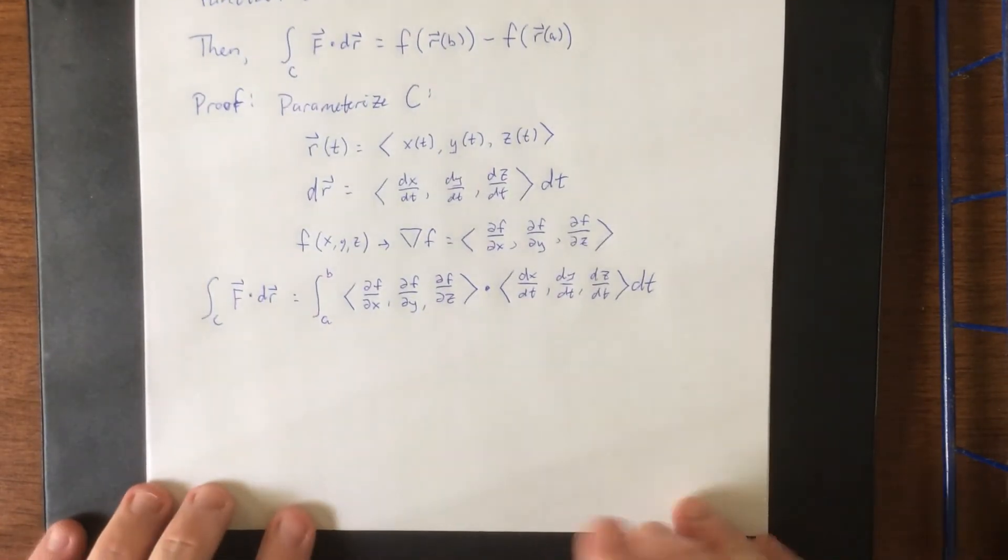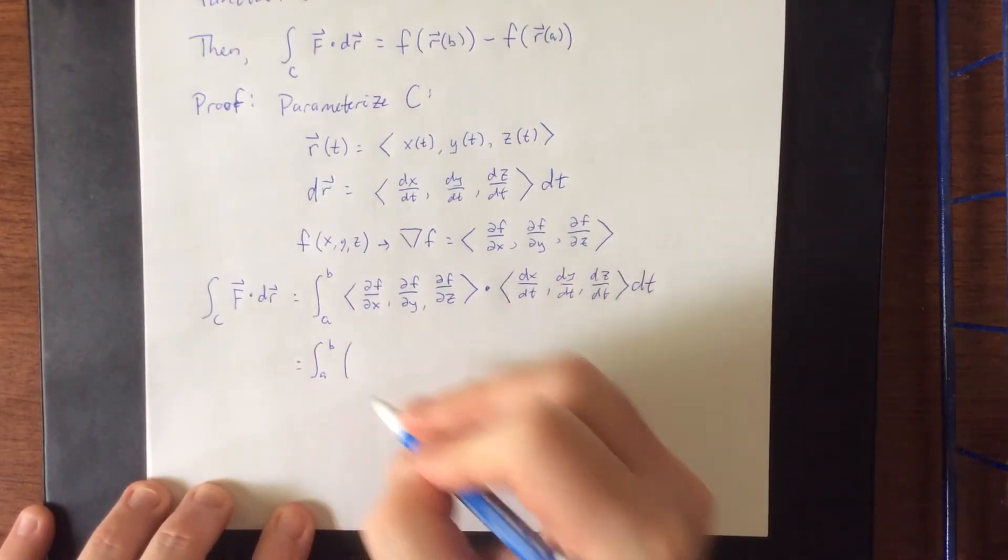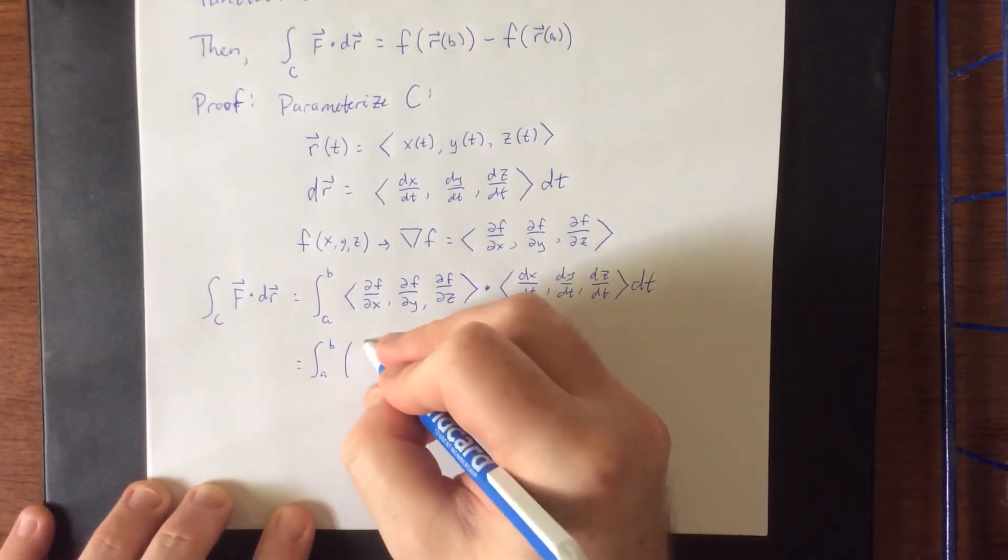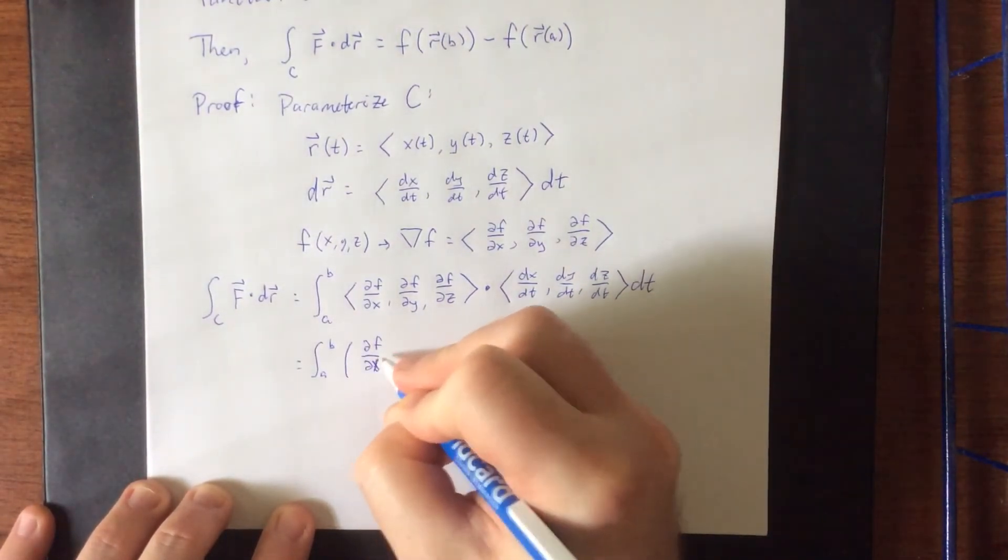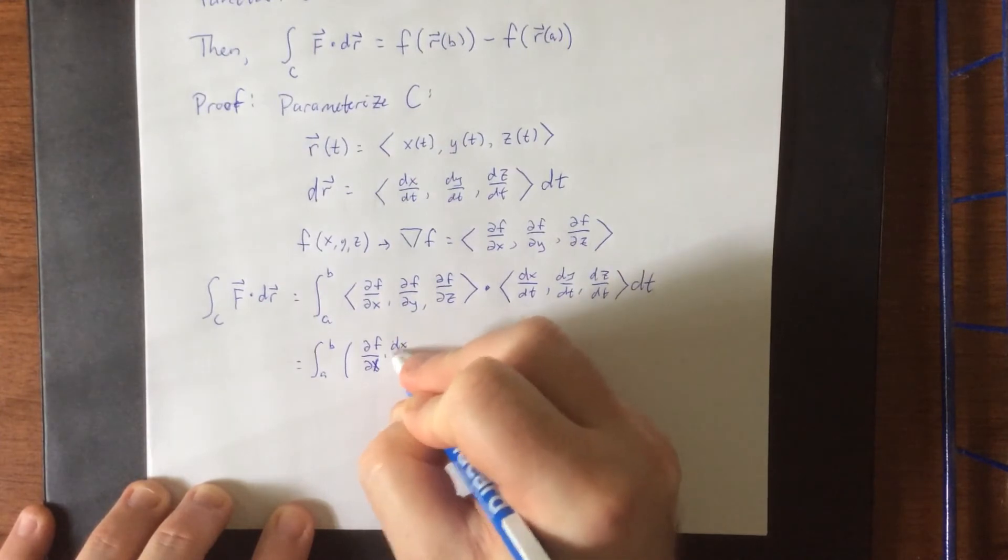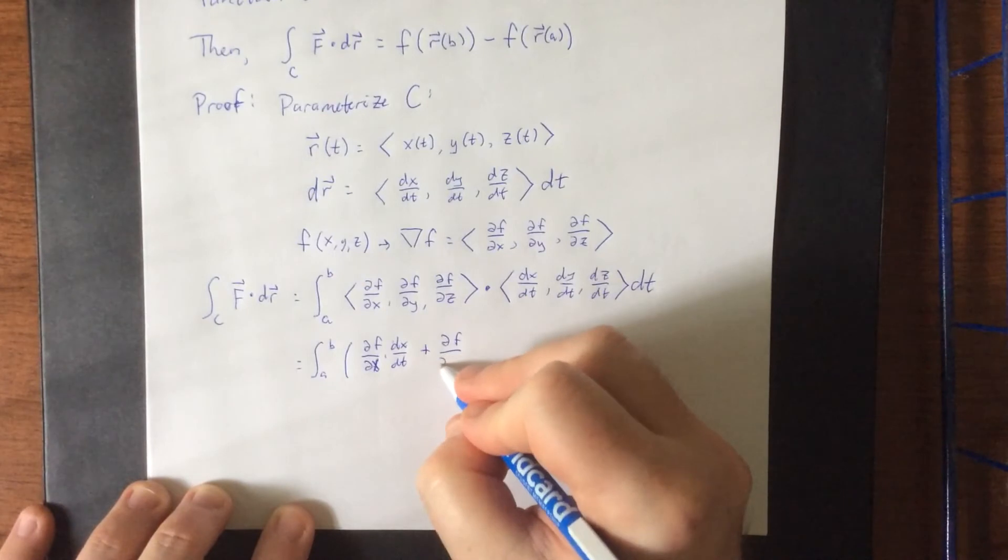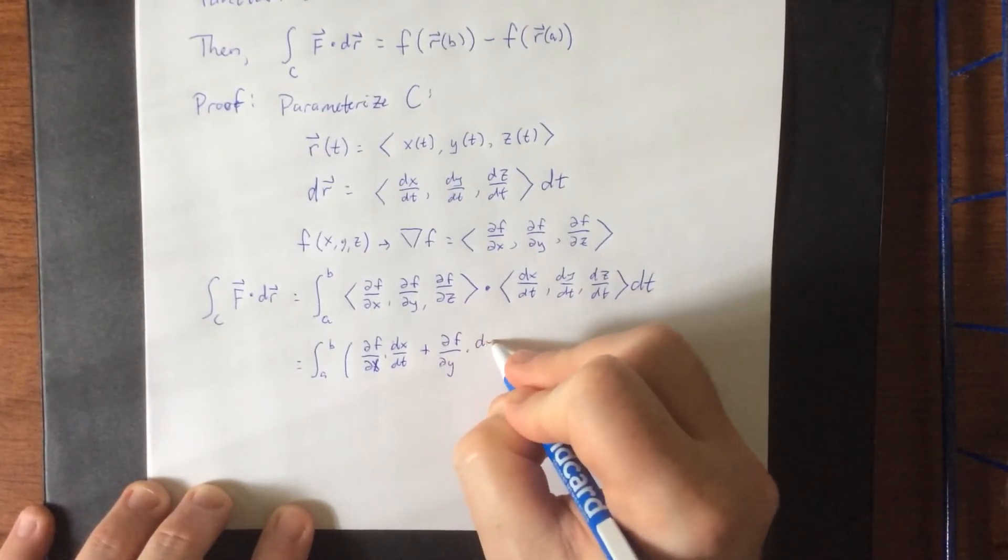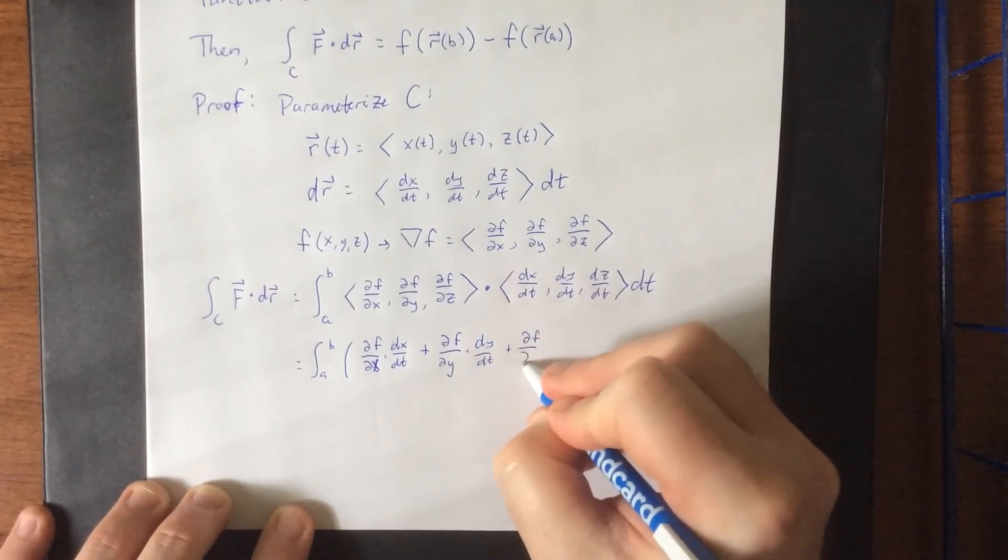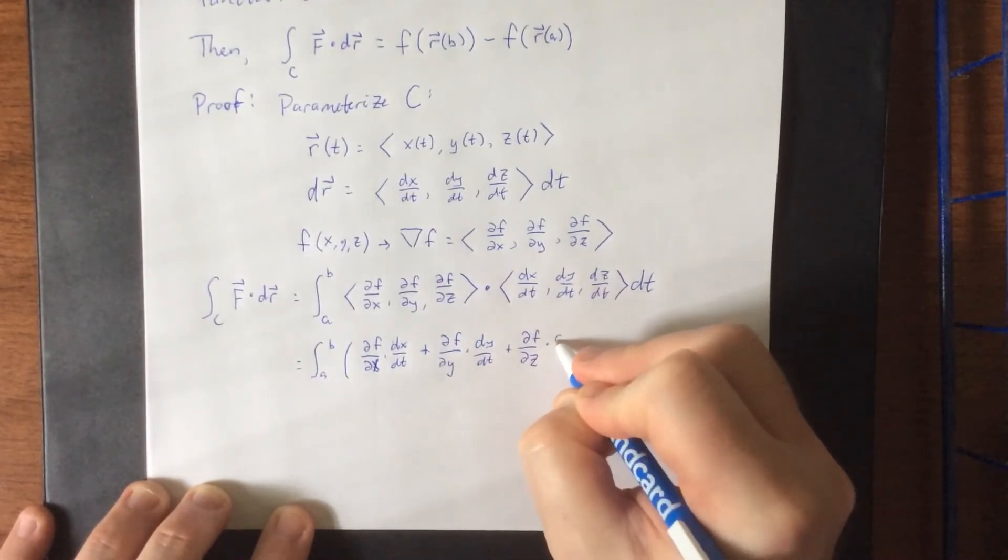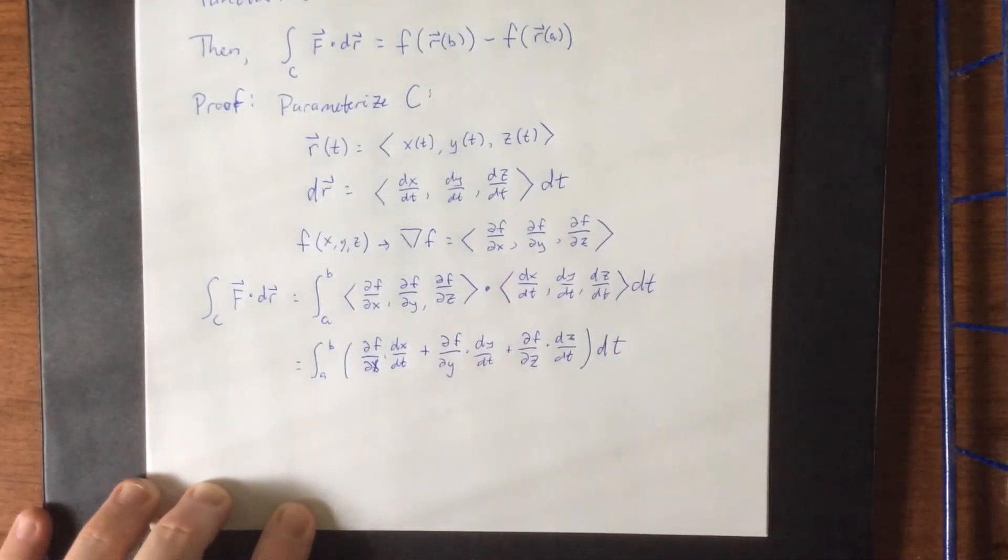Then we'll actually take the dot product of these two vectors, and we will see something miraculous take place. So multiplying the corresponding components together, this will be the partial derivative of F with respect to X times DXDT, plus the partial derivative of F with respect to Y times DYDT, plus the partial derivative of F with respect to Z times DZDT. And all of that is DT.